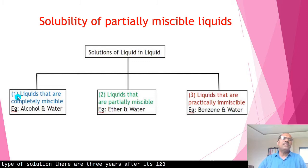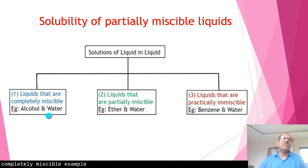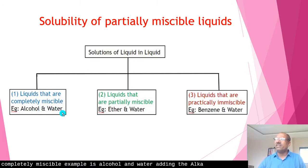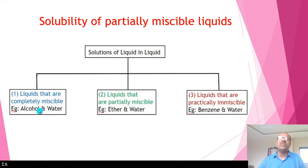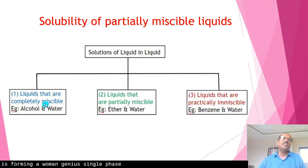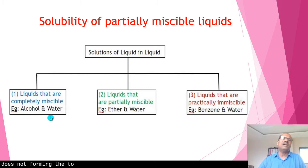The first type is liquids that are completely miscible. An example is alcohol and water. Whenever we add alcohol to water and shake vigorously, then keep it on stable ground, after some time the alcohol and water form a homogeneous, uniform single-phase system. They do not form two separate layers.